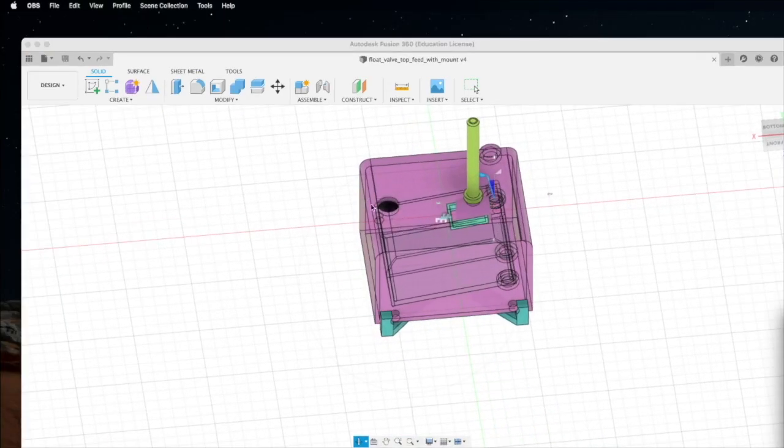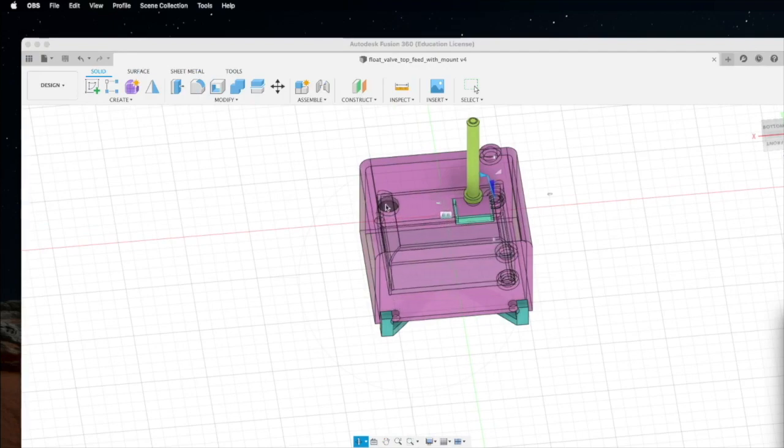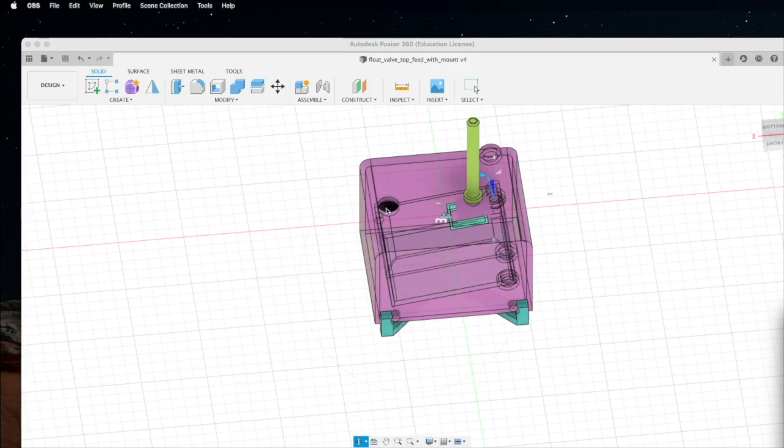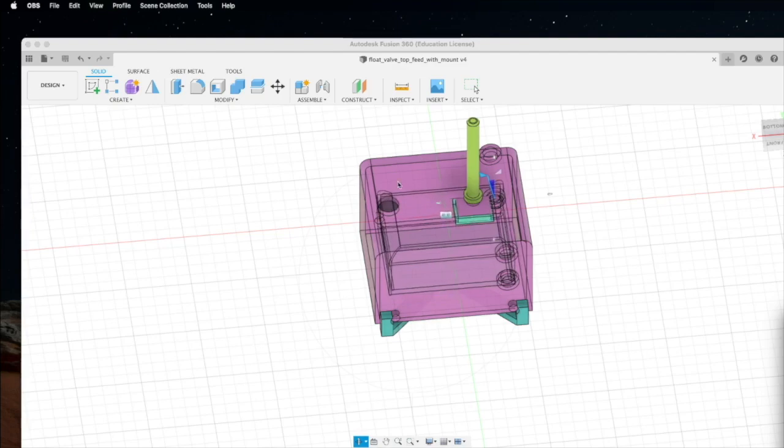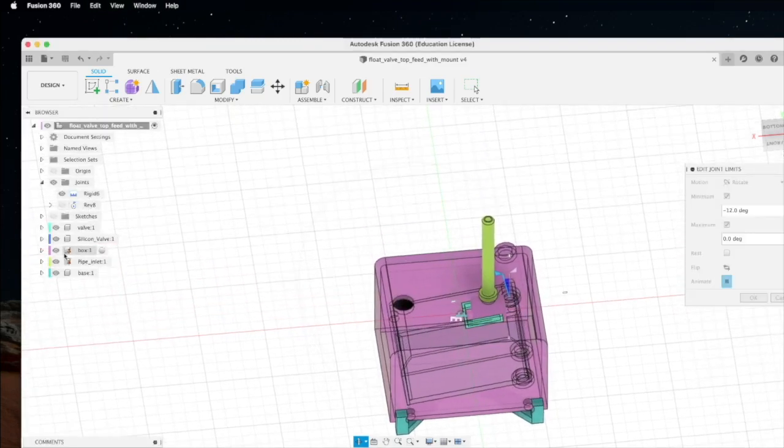The other part you may notice is there's an air hole. The air hole is very important. Without the air hole, the inside of the float valve will be vacuumed and then the float valve will not be able to rise to the top. Let me get rid of the box to show you what's inside.